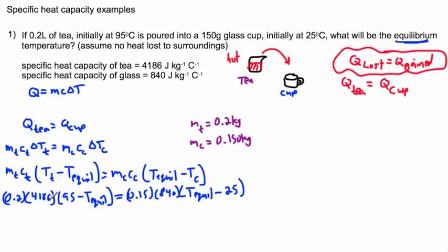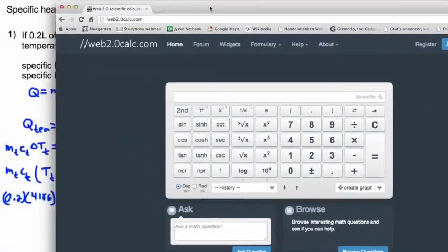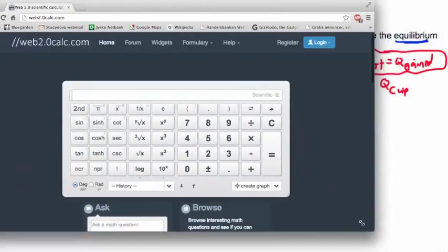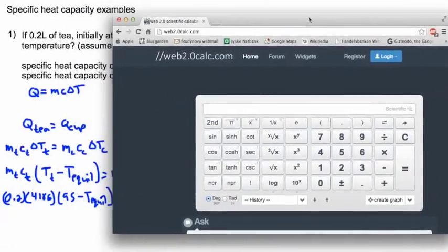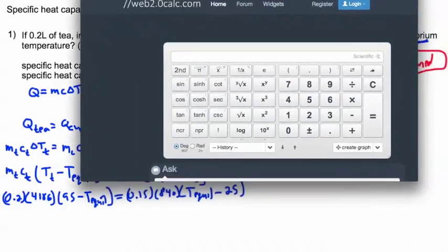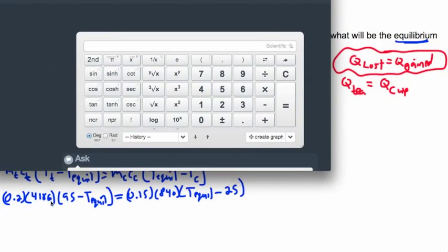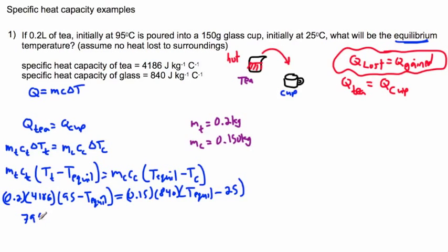Now it's just a matter of solving this. This looks a little bit ugly, but we can totally do it. I'm going to use a calculator. So I have 0.2 times 4186, that gives me 837.2. Then I need to do that times 95, which gives me 79534.